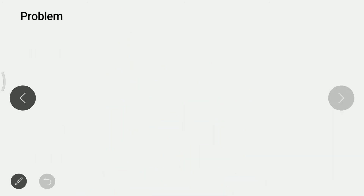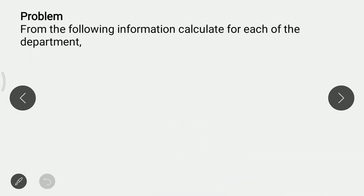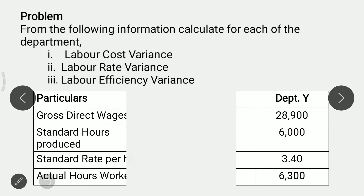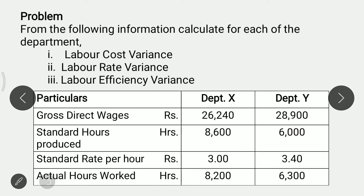Problem. From the following information, calculate for each of the department: Labor Cost Variance, Labor Rate Variance, Labor Efficiency Variance. There are two departments, Department X and Department Y. Gross Direct Wages for Department X: Rs. 26,240. For Department Y: Rs. 28,900.